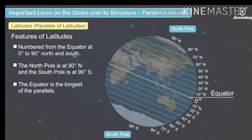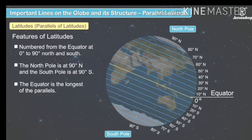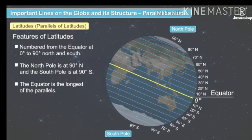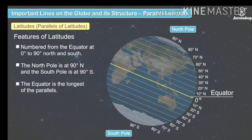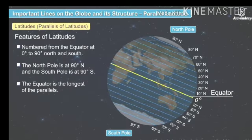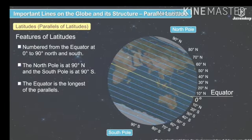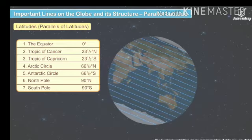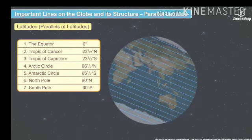In the same way, in the Southern Hemisphere, the degrees also increase — 10 degrees South, 20 degrees South — and the South Pole is at 90 degrees South. The equator is the longest of all the parallels. Now let's discuss about the important latitudes.